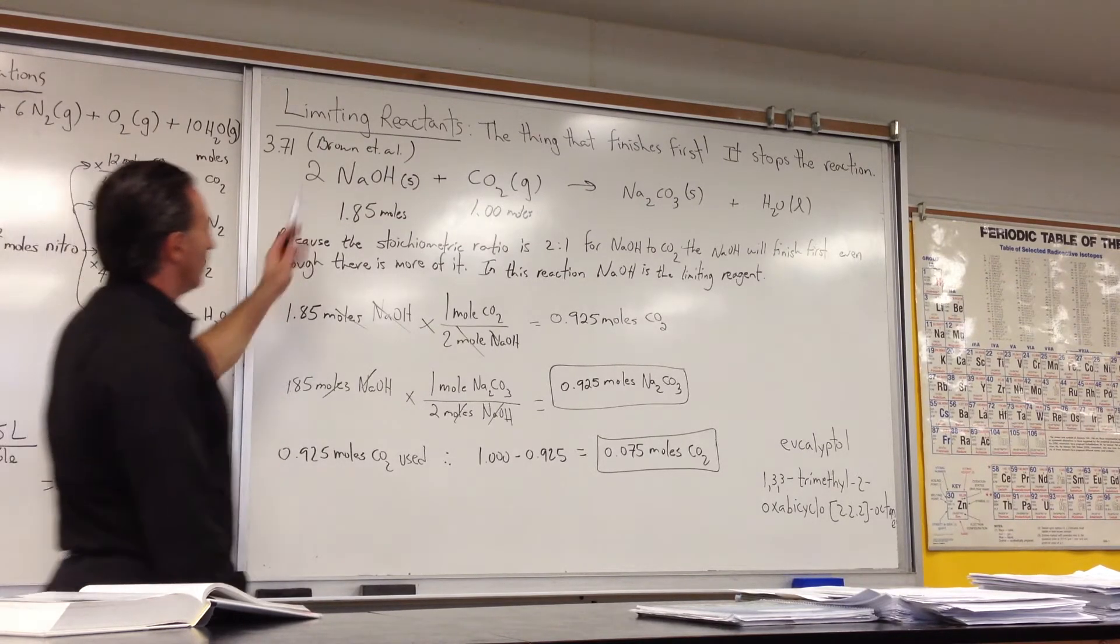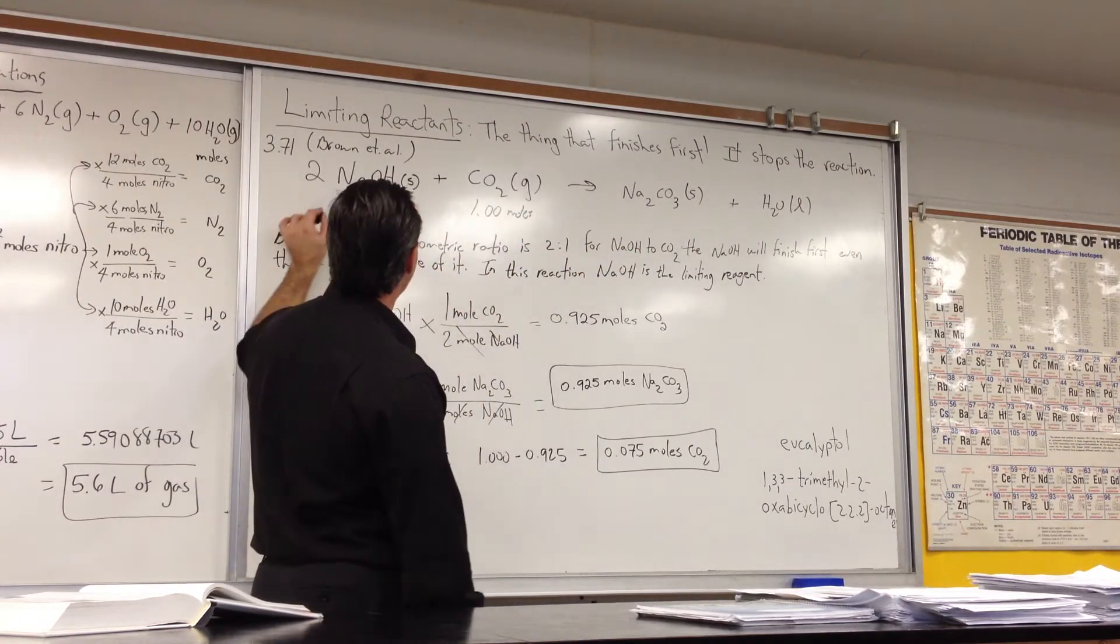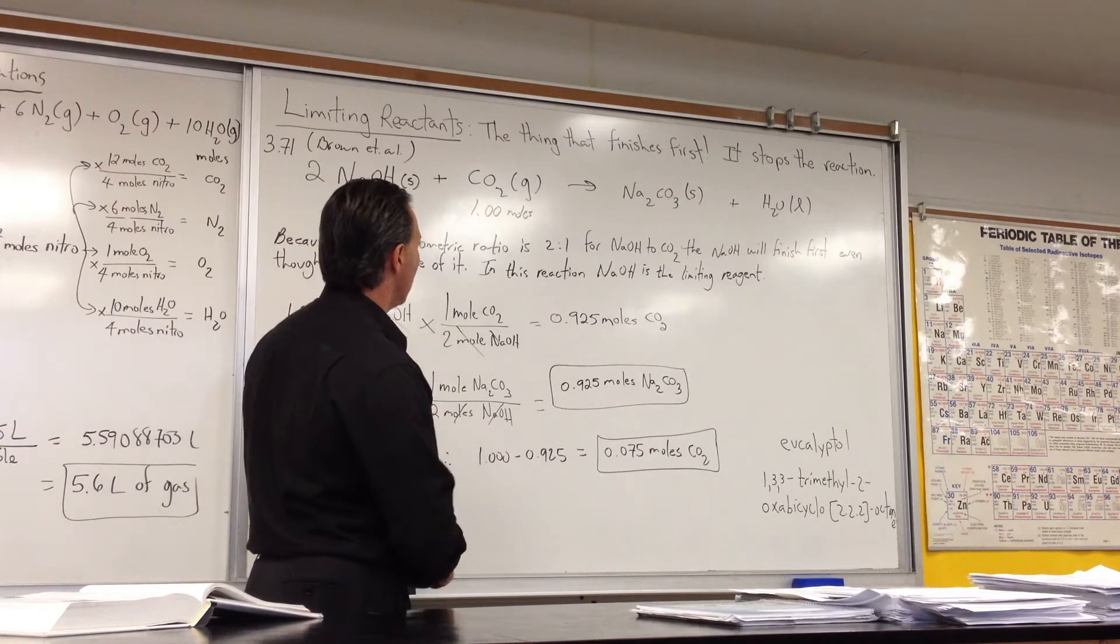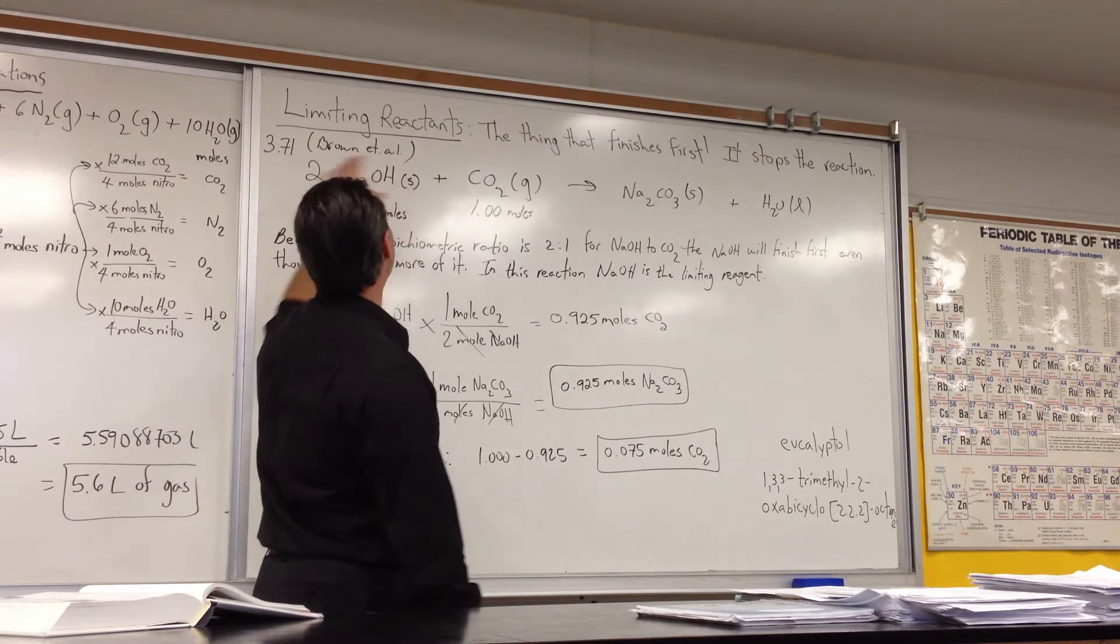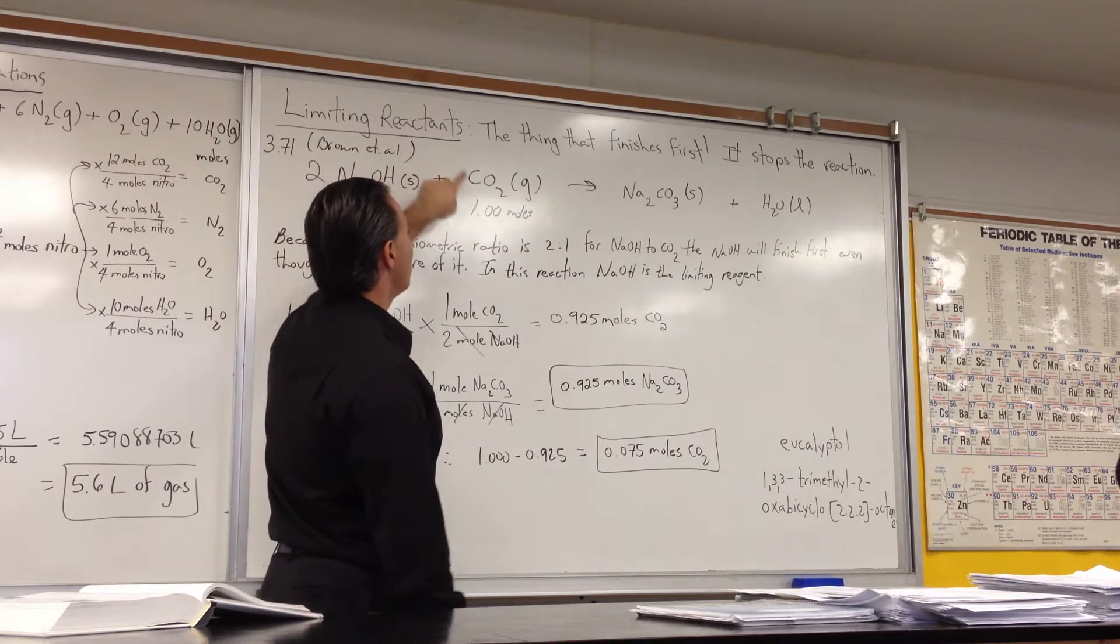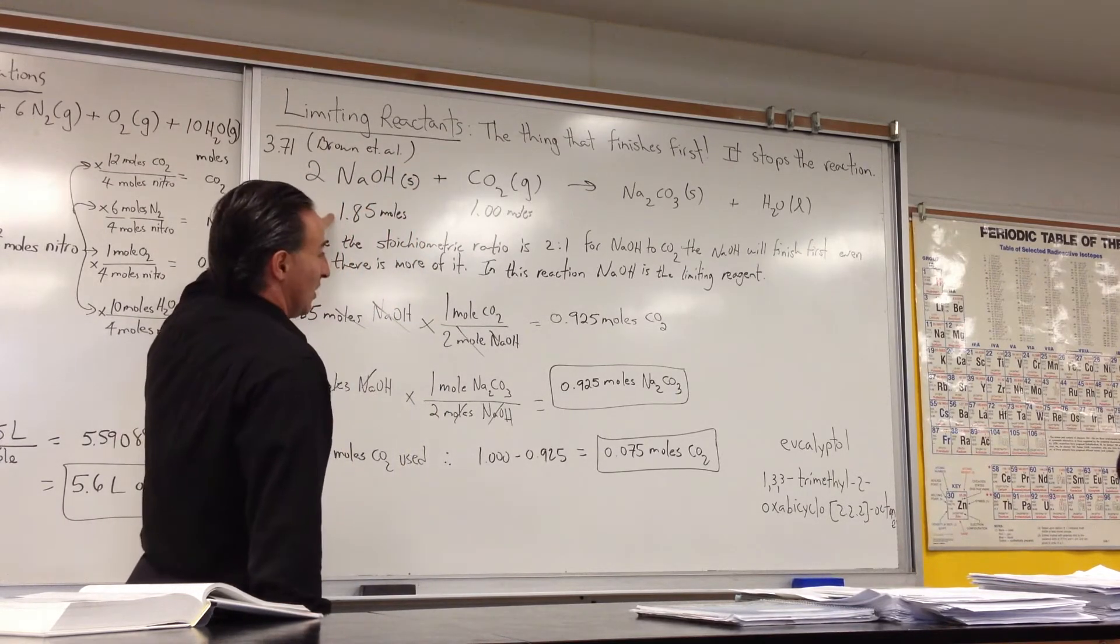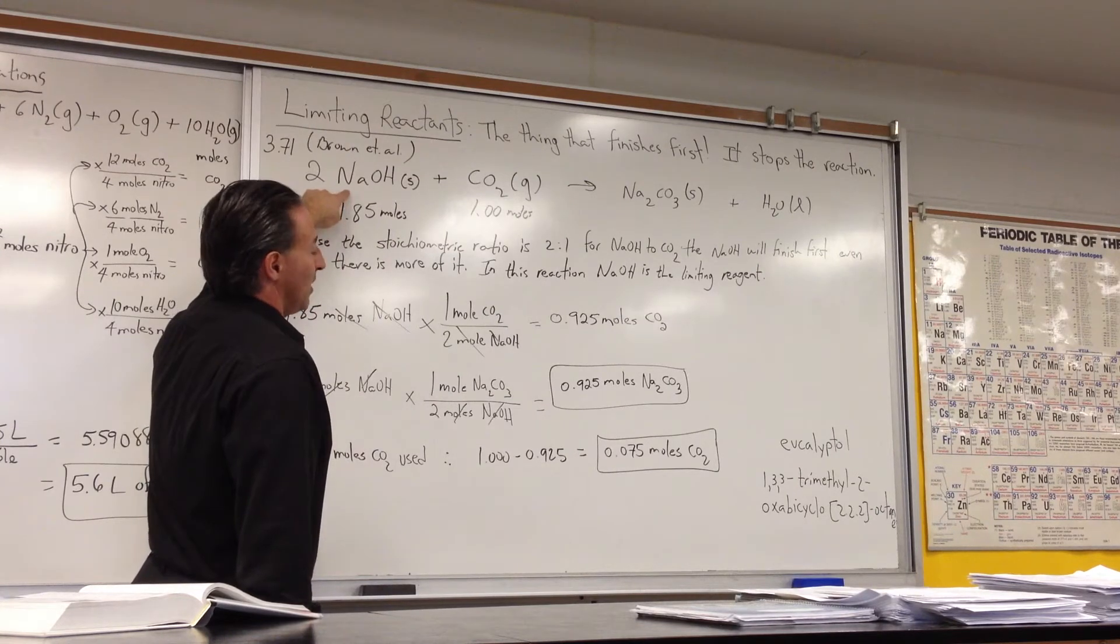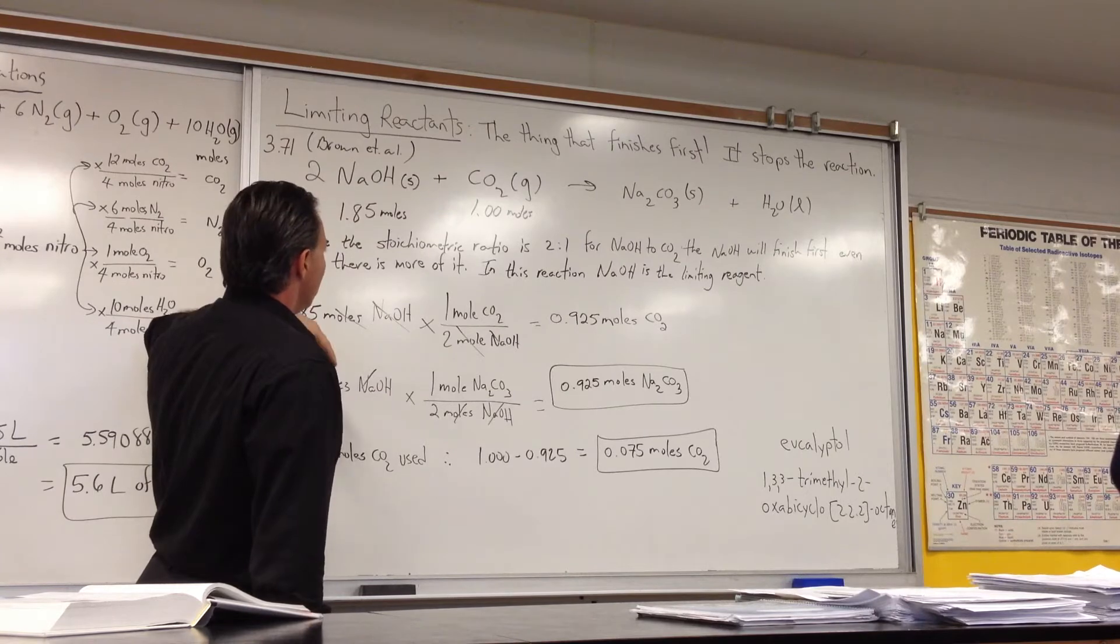Okay, so I showed the chemical reaction and the amounts involved. So it looks as though we have an excess of sodium hydroxide, but you have to keep in mind the stoichiometry of the reaction. It's two to one. You need two moles of sodium hydroxide for every one mole of carbon dioxide. So in fact, this is the limiting reaction. This is the part of the reaction that's going to end up finishing first.